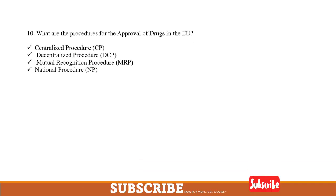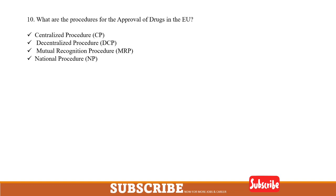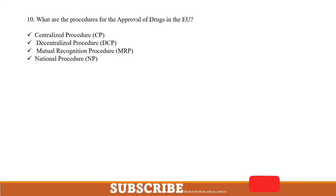What are the procedures for the approval of drugs in the EU? If you studied M.Pharm in regulatory affairs or pharmaceutical specialization, you will already know these. The procedures include: the Centralized Procedure, the Decentralized Procedure, the Mutual Recognition Procedure, and the National Procedure.